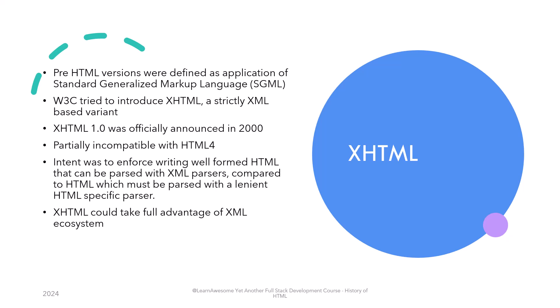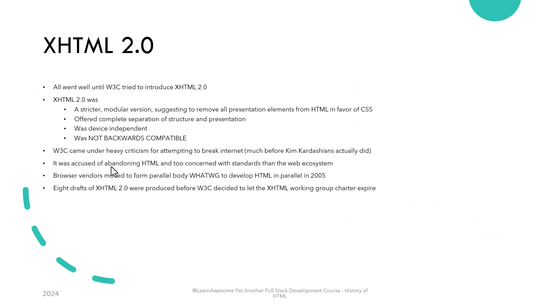The idea, intent, and implementation were great, until two years later W3C tried to introduce XHTML 2.0. XHTML 2.0 was different than its predecessors — a great idea for a more strict and modular version that suggested removing all presentation elements from HTML in favor of CSS, resulting in complete separation of structure and presentation, hence delivering device independence. The new language was more complex and difficult to work with than earlier HTML versions. But then came one teeny tiny detail: unlike all its predecessors, it wasn't backwards compatible. Web was the biggest thing in the world at that moment and everybody cared — there was an uproar and a lot of web developers simply refused to shift to the new standard. Many in the industry blamed W3C of abandoning HTML and being married to the XML idea at the cost of evolving HTML.